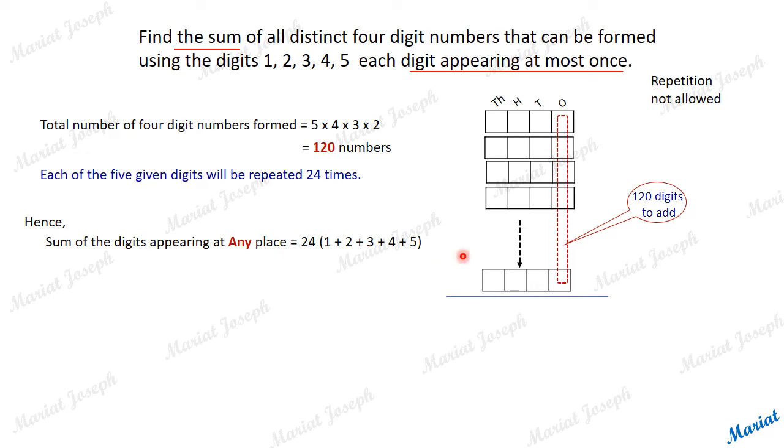We can add this one place as 24 times 5 plus 24 times 4 plus 24 times 3 plus 24 times 2 plus 24 times 1. That is 24 into (1 + 2 + 3 + 4 + 5), which is equal to 24 into 15, equal to 360.